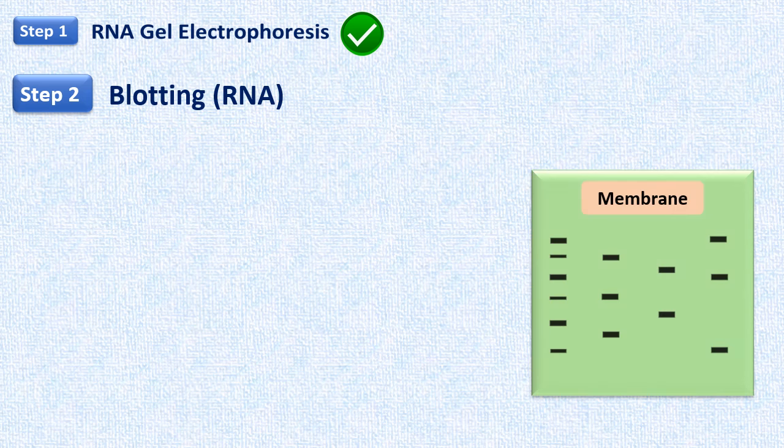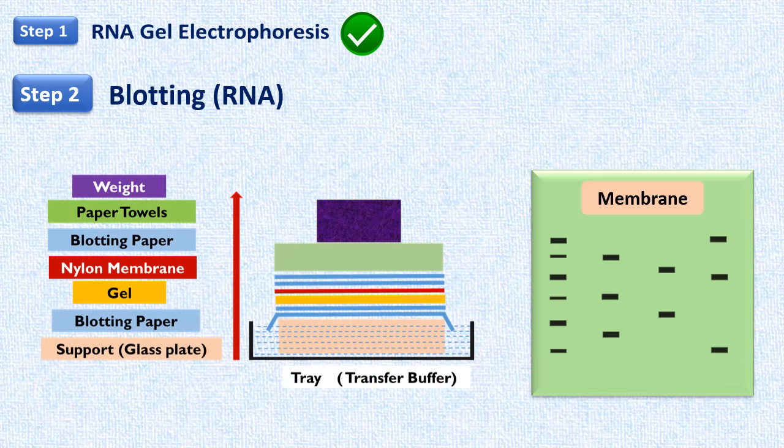The second step is blotting. The separated RNA molecules are now transferred from the gel to the suitable solid support such as the nylon membrane. The method of transfer is similar to the traditional blotting method we discussed in the southern blotting.